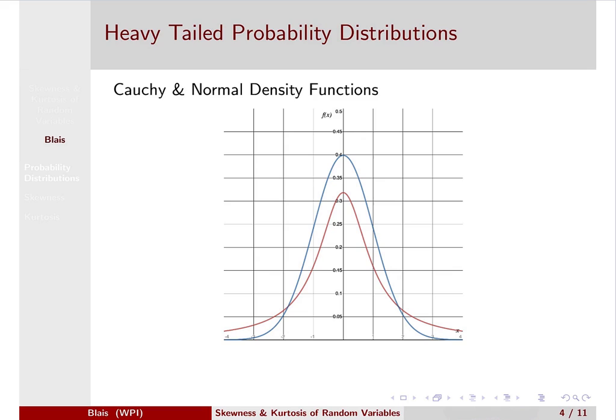And this extends out here, so you have three, four, five, six standard deviation moves being much more probable under the Cauchy distribution than the normal distribution.